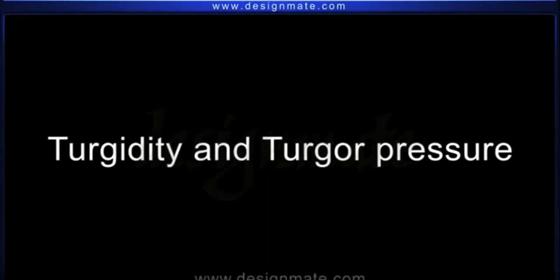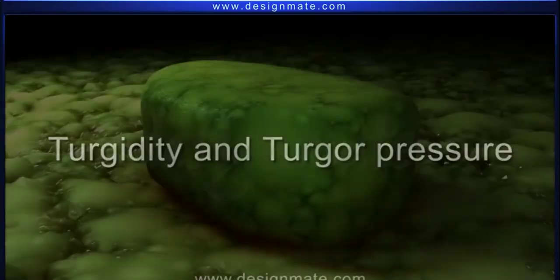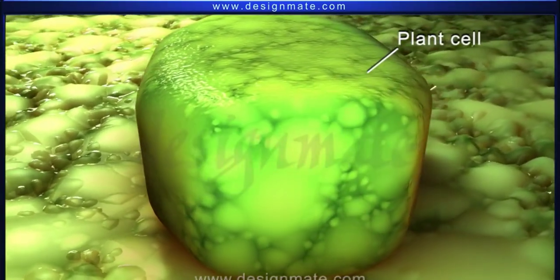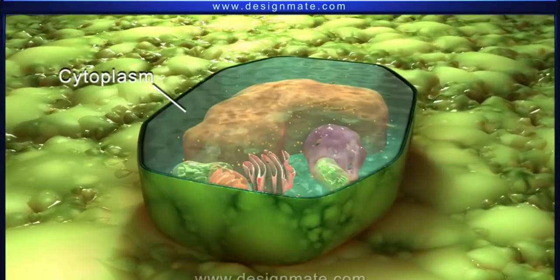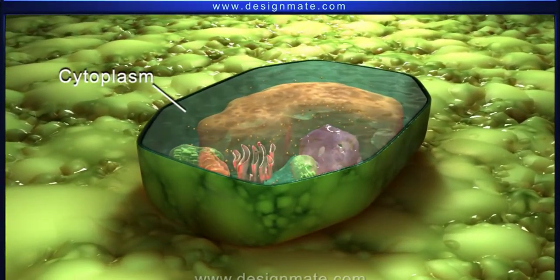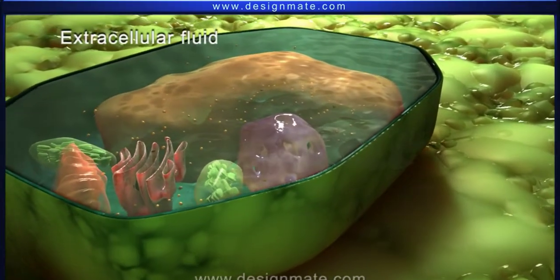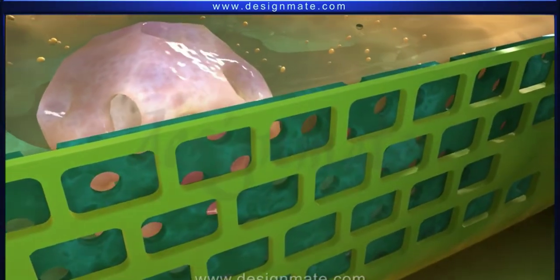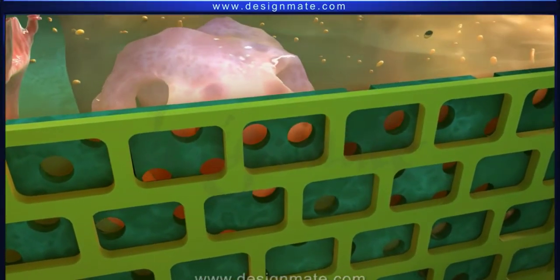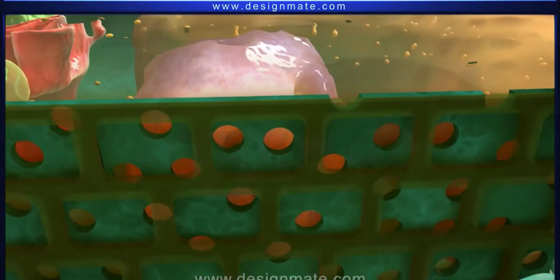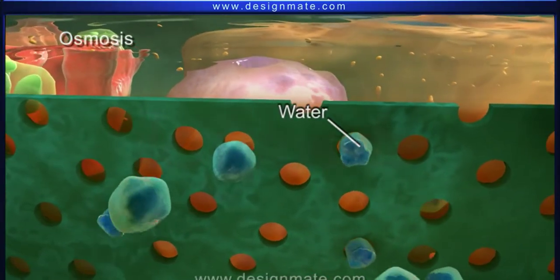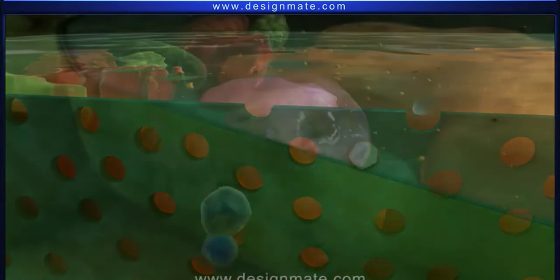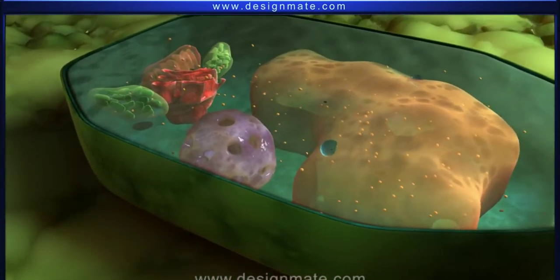Turgidity and turgor pressure in a plant cell: The cytoplasm is typically more concentrated than the surrounding extracellular fluid, causing the cells to take up water by osmosis. When water enters the plant cell, a pressure is developed within the cell.